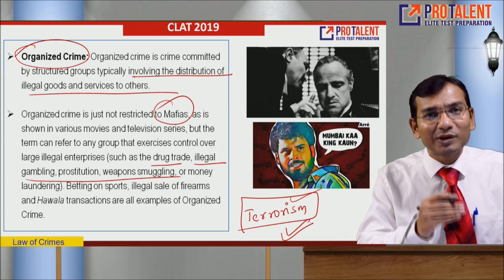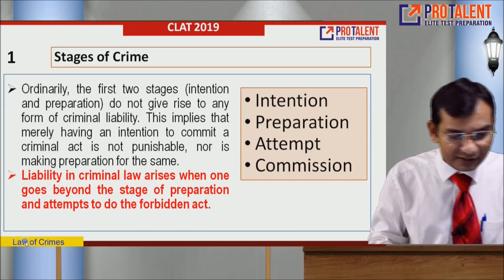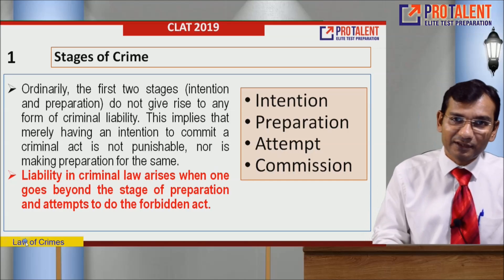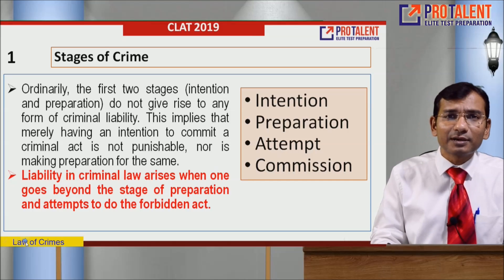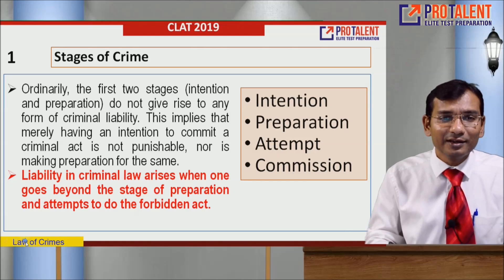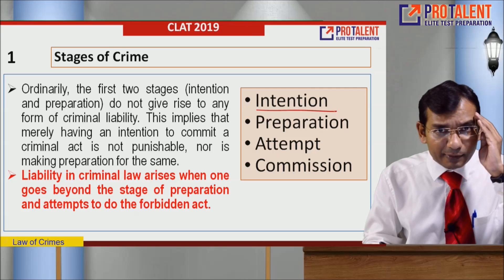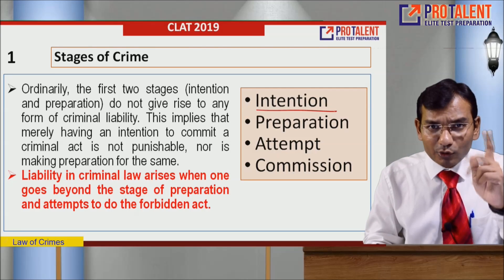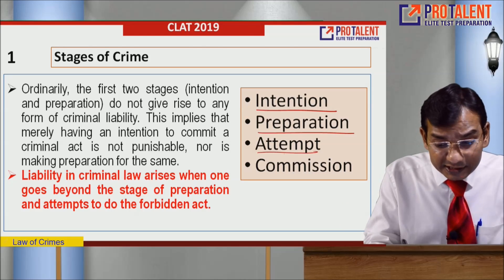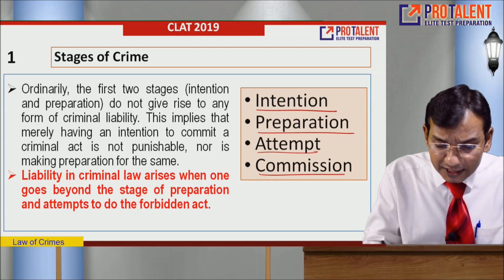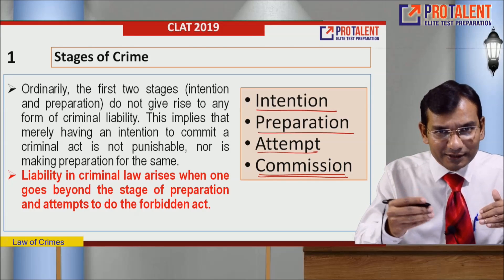Organized crime is a group of people coming together to commit a particular kind of crime. Now, coming to the stages of crime: first is intention — having the thought to do wrong. Second is preparation — making all arrangements. Third is attempt — actually trying. Fourth is commission — carrying out the crime. These four things constitute the stages of crime.